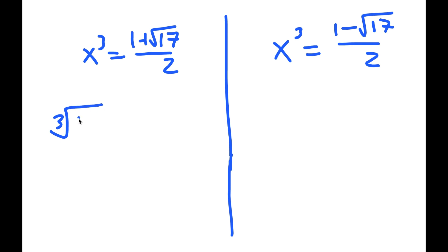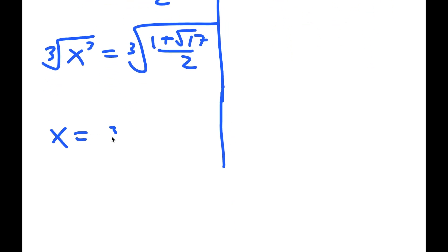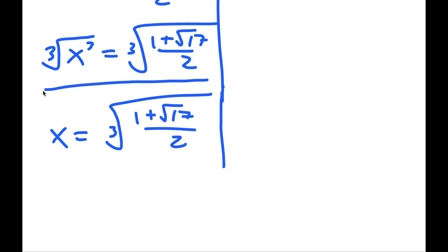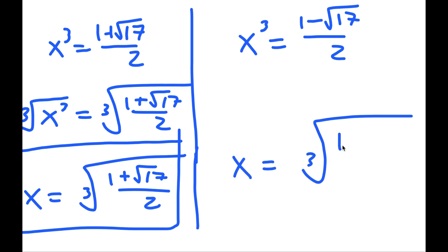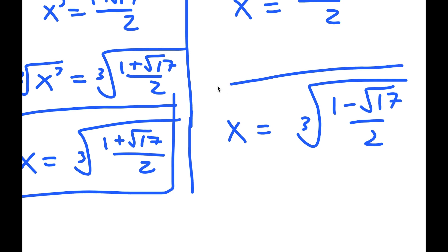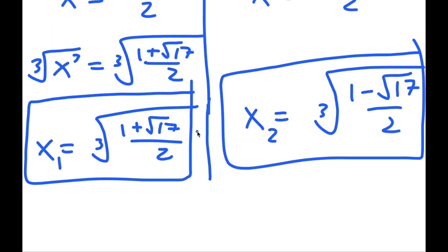Taking the cube root on both sides, I get x is equal to the cube root of 1 plus the square root of 17 over 2 — this is solution 1. And I also get x is equal to the cube root of 1 minus the square root of 17 over 2 — this is solution 2. So these are my two solutions to this equation.